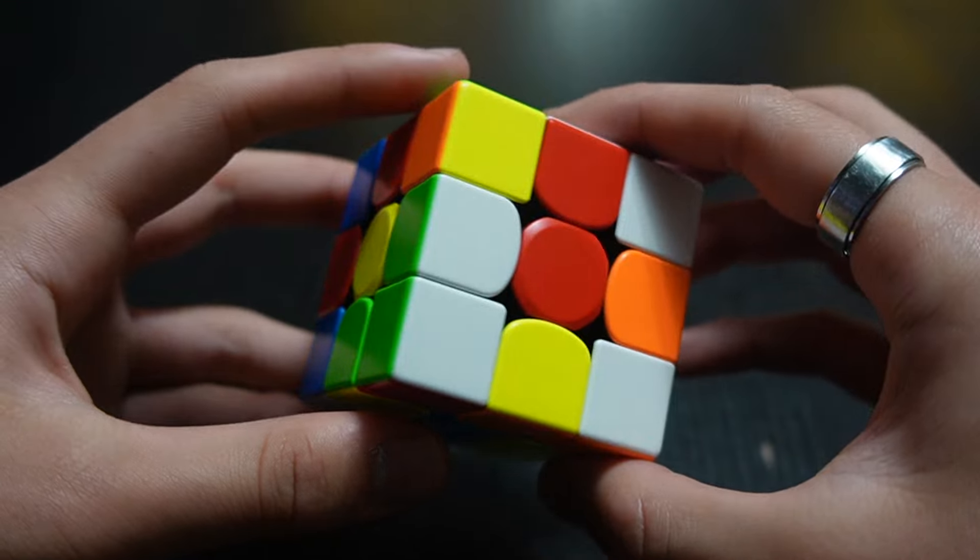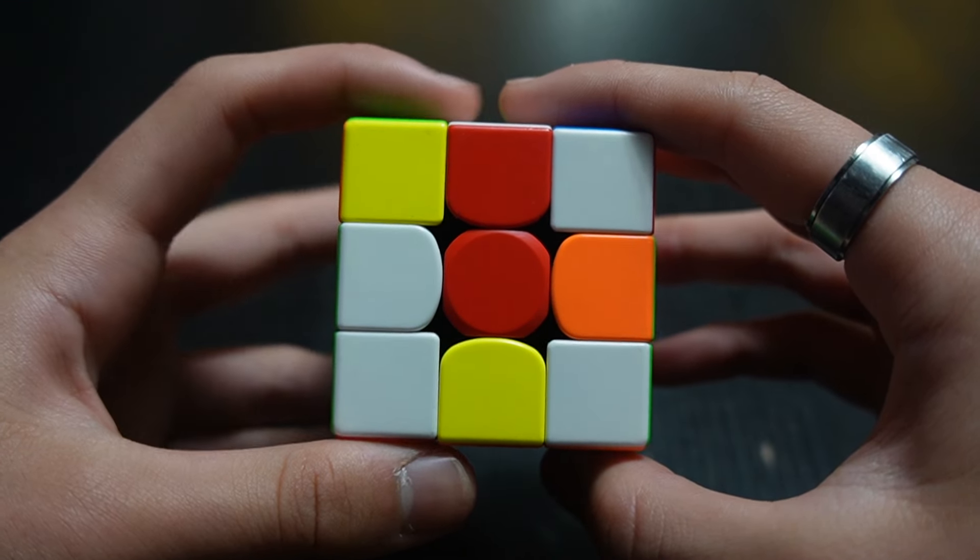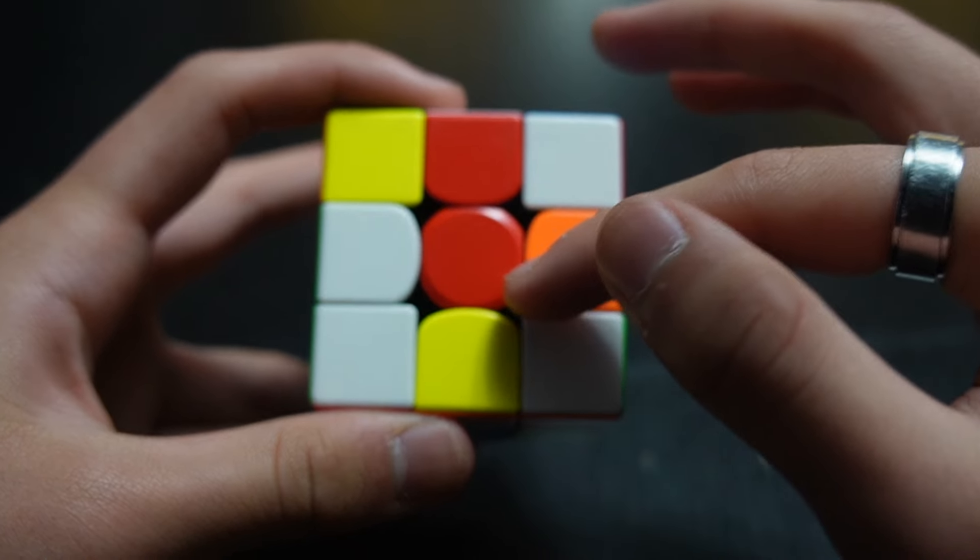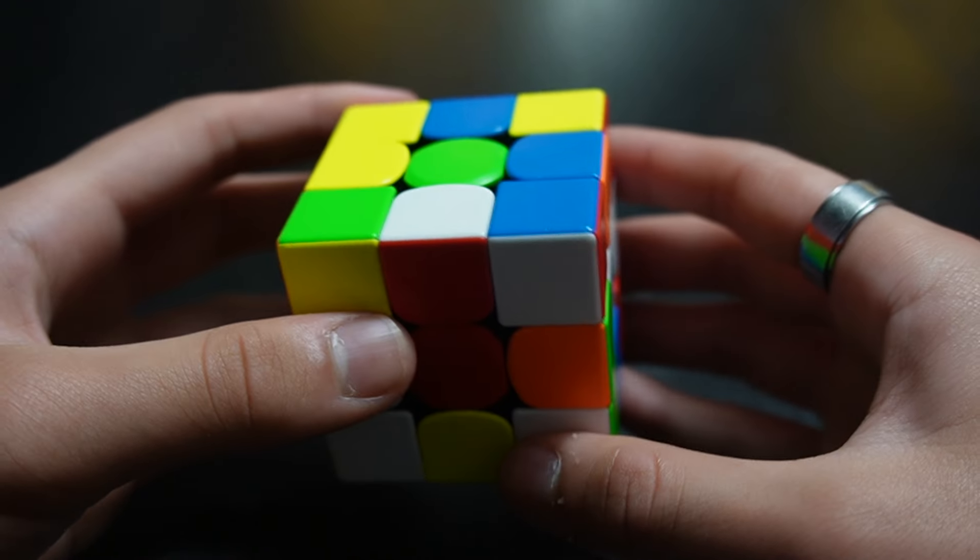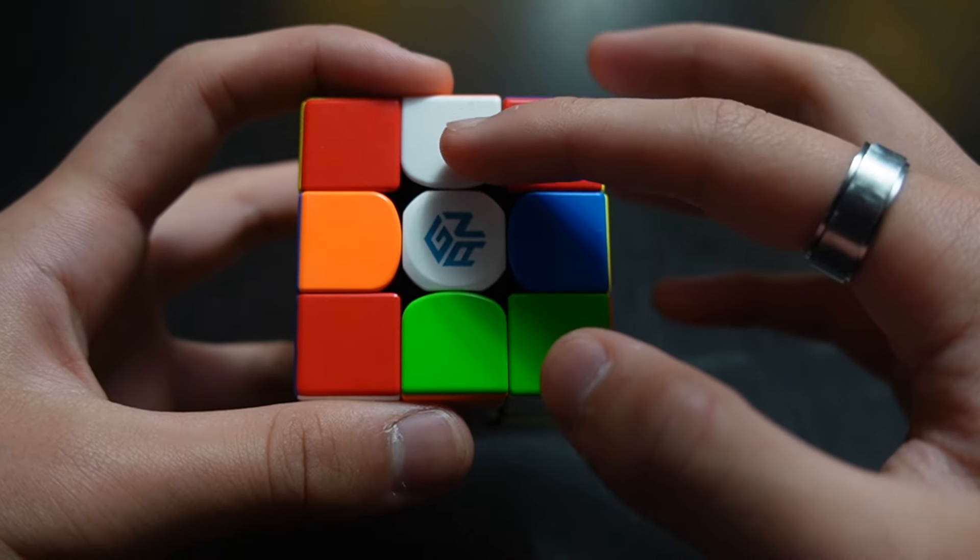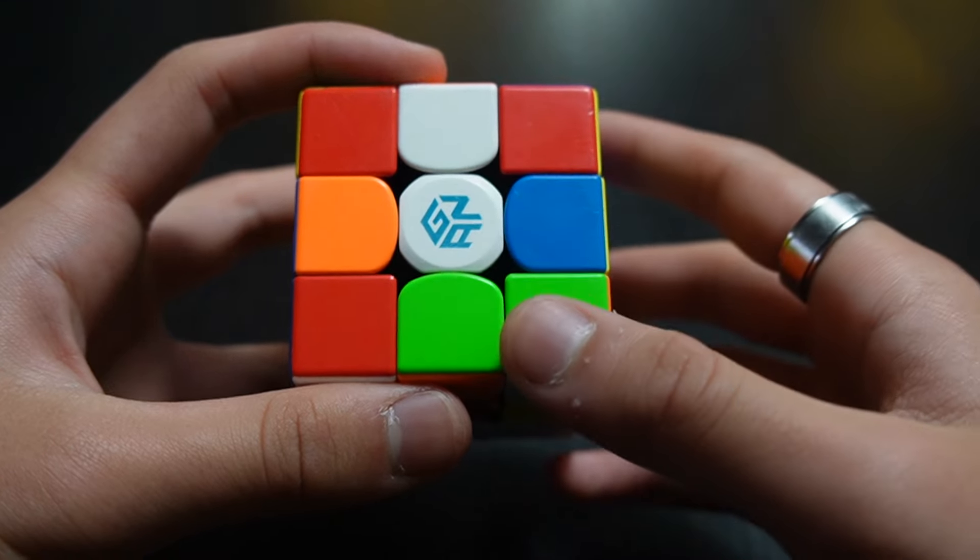If you turn the cube to another side, what color is the center? Well, in this case, it would be red, so we're on the red side. One more example: if you twist it this way, what color is the center? It would be white, so that means we're on the white side.